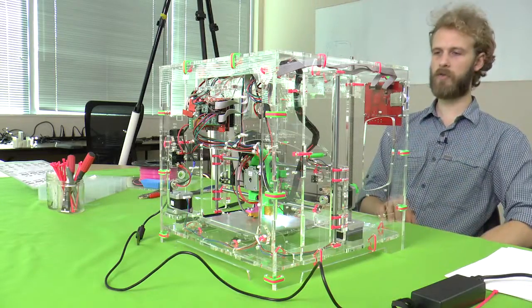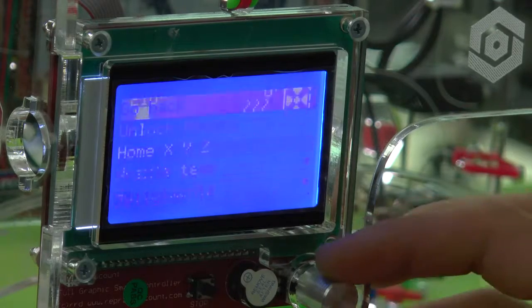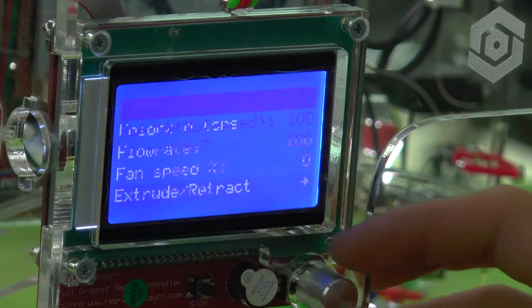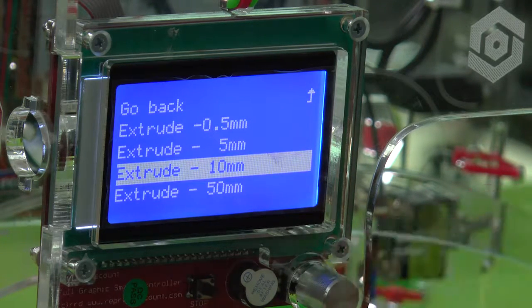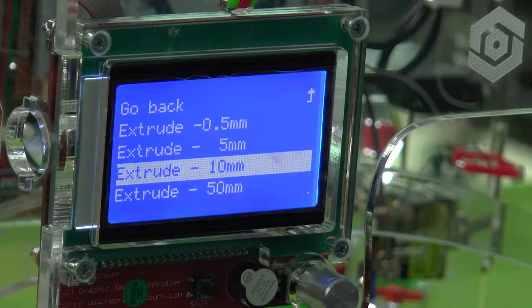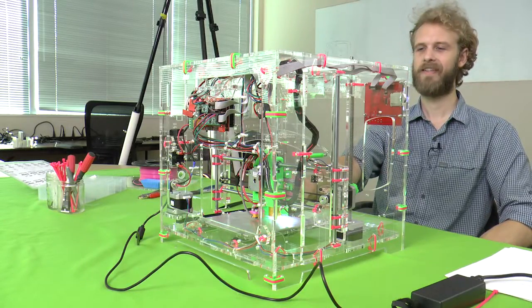All right. We're definitely hot enough now to try some stuff. So let's instruct the printer. Go to Adjustments, Extrude, Retract and let's extrude like, I don't know, 10 millimeters. Doesn't matter. The extruder motor should start spinning. It doesn't. Why not?